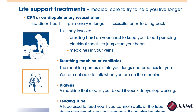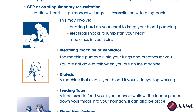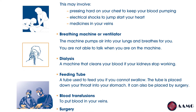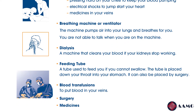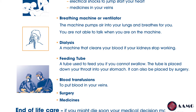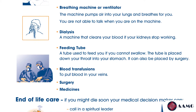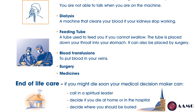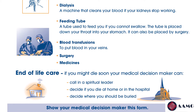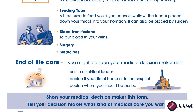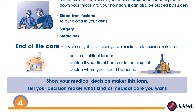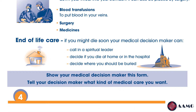Page four covers other decisions your medical decision maker can make. Your medical decision maker can decide on what life support treatments you are to undergo to try to help you live longer. These include CPR or cardiopulmonary resuscitation, a breathing machine or ventilator, dialysis, feeding tube, blood transfusions, surgery, and medications. He or she can also decide on your end-of-life care — such as calling in a spiritual leader, deciding if you die at home or in a hospital, and deciding where you should be buried. Be sure to tell your medical decision maker clearly what kind of medical care you want.